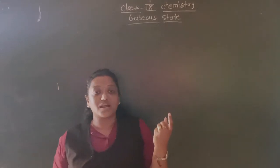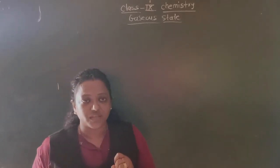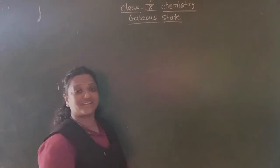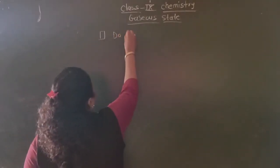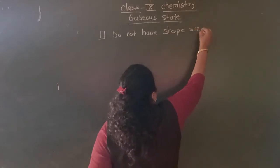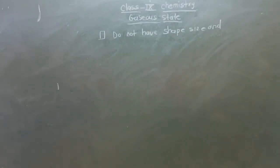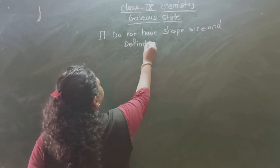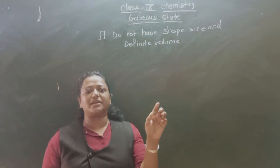In your lower grades, you have already learned some basic properties of the gaseous state, so it is not quite new for you. But I am going to explain all of them in very much detail. So let us start without wasting much time. The first property of the gaseous state: gaseous state does not have a specific shape, specific size, or even a definite volume.